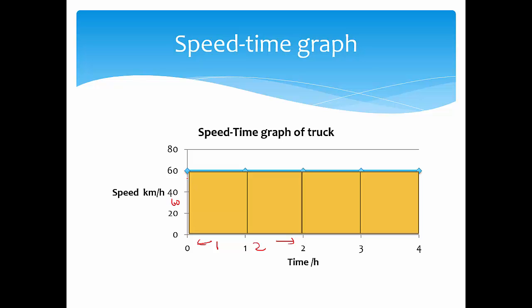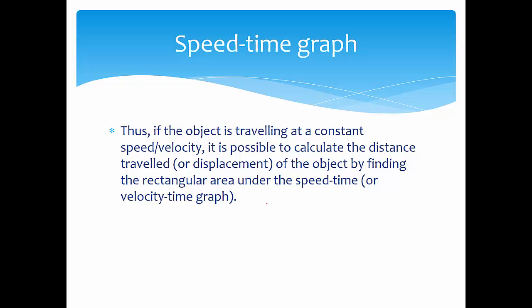Essentially, using the distance formula is the same as taking 60 multiplied by the time taken. If the object is traveling at a constant speed or velocity, it is possible to calculate the distance simply by finding the rectangular area under the speed-time graph.